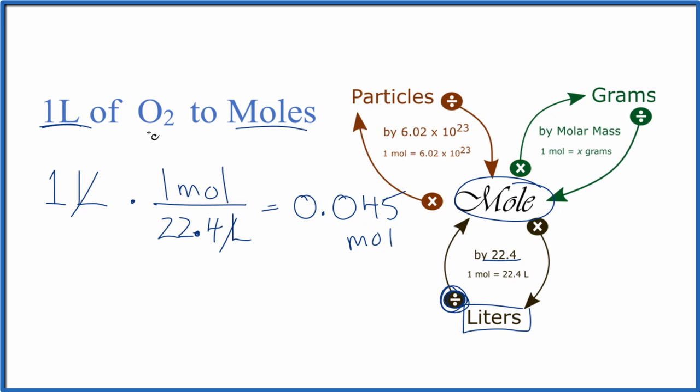So that's how you convert one liter of O2, oxygen gas, to moles. If you needed to convert that to grams, you just convert your moles to grams by multiplying by the molar mass of O2.